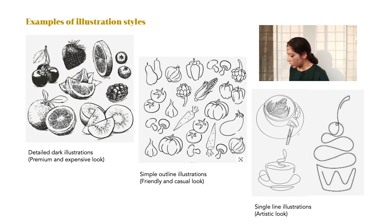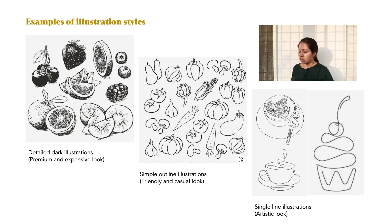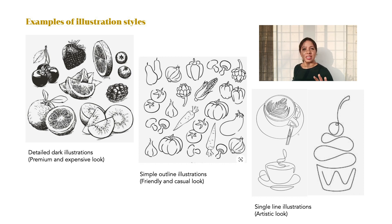Then we jump into simple outline illustrations, which you cannot go wrong with. It's the least risky kind of illustration — just a simple outline, but still enticing. It makes the packaging look very friendly, cute, and welcoming. It's pretty casual in nature, if that's the brand look he wants to go for in the future. Then there are single line illustrations, which is just a little risky. If he could get the right artist to do single line illustrations, he could totally make this work.